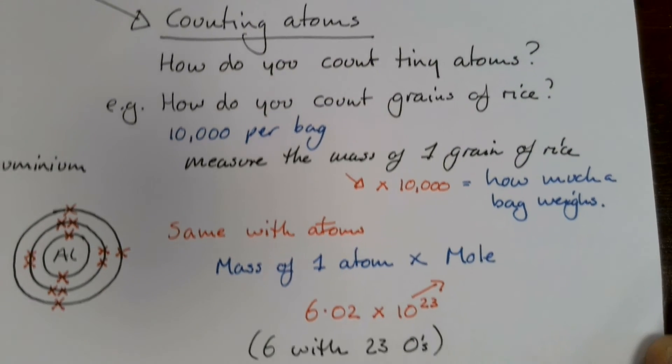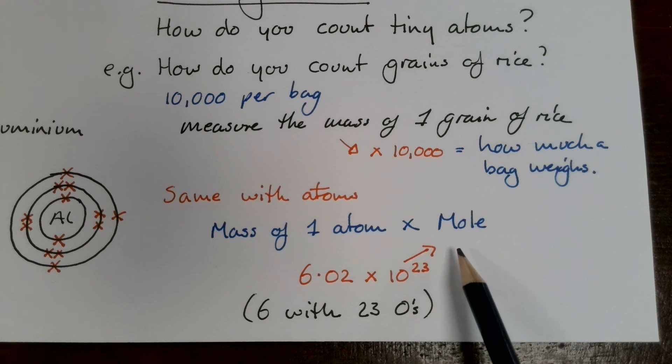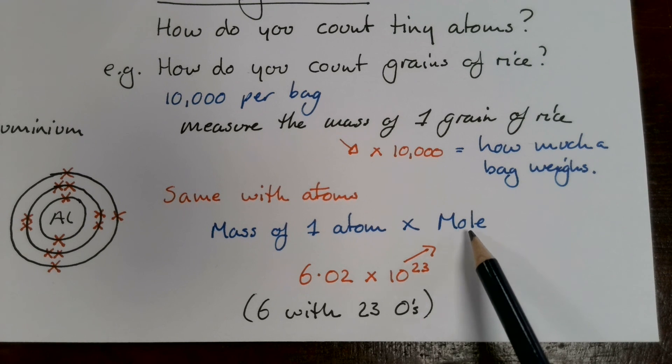So we can do the same with atoms. Instead of wanting ten thousand though, we count atoms in a huge number. It's a really long number. It's actually a six with twenty-three zeros on the end of it. And there's a special name for that number, and it's called a mole. It's like a pair is worth two, a dozen is worth twelve, you might say a grand is a thousand. We have certain names for certain numbers, and this one is called a mole. It's a six with twenty-three zeros on the end of it.